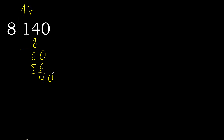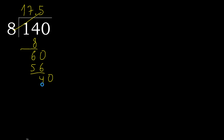That is not a number, therefore complete with 0, here, with point — complete point. 40. 8 multiplied by 5 is 40, which is not greater. 40 minus 40 is 0.